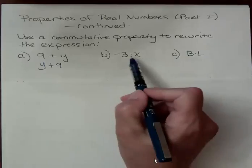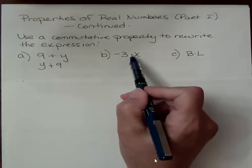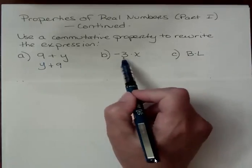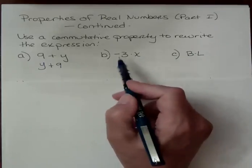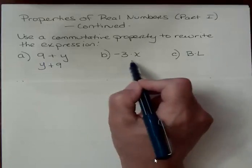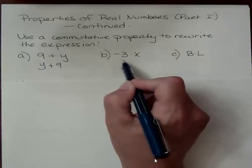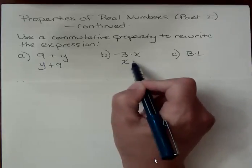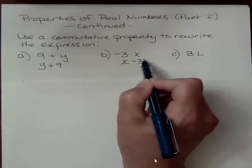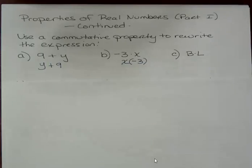For the next one, it's multiplied, so we're going to use the commutative property of multiplication. We're going to take this negative 3, and we're going to put it on the other side, and we're going to put the x out front. I don't want that to look like a subtraction problem, so I want to make sure and put parentheses around it to show x times negative 3.